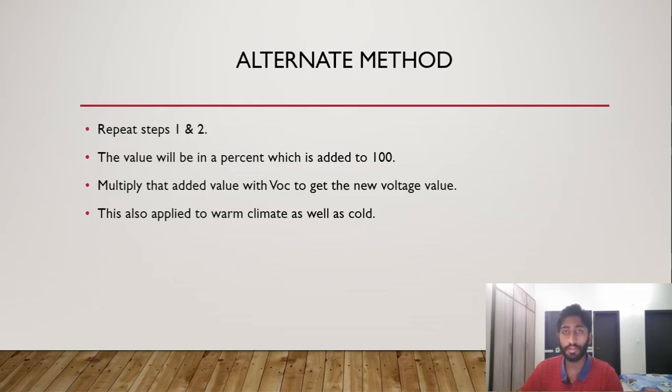The alternate method is if you have the temperature coefficient as a percent value rather than the voltage value. For example, you repeat the same steps one and two, after multiplying with the temperature coefficient, you'll have a percent value, let's say 16% instead of 16 volts. So you're going to add that 16 with 100, and that gives you 116%. So then you just multiply with the voltage value, the Voc or the Vmp, whatever it is for cold climate or warm conditions, climate conditions, and that value you'll get it respectively. So just that in the alternate method, you just have a percentage temperature coefficient rather than the voltage value of the temperature coefficient.